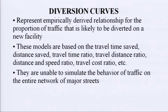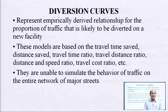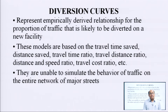Divergence curves represent empirically derived relationships for the proportion of traffic likely to be diverted to a new facility. These models are based on travel time saved, distance saved, travel time ratio, travel distance ratio, distance ratio, distance and speed ratio, travel cost ratio, etc. However, they are unable to simulate the behavior of traffic on the entire network of major streets.